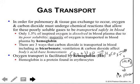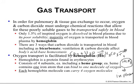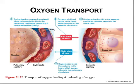Oxygen transport is facilitated by hemoglobin, which is a protein found in erythrocytes. It's made up of four subunits, each with a heme group, and each heme group contains an iron atom at its core that can bind a single molecule of oxygen. Each hemoglobin molecule can carry four oxygen molecules as a result. Hemoglobin binds and releases oxygen by two reactions — loading and unloading. During loading, oxygen from the alveoli binds to hemoglobin in the pulmonary capillaries, converting deoxyhemoglobin into oxyhemoglobin. Hemoglobin with one to three molecules of oxygen bound is partially saturated, while with four molecules it is fully saturated.